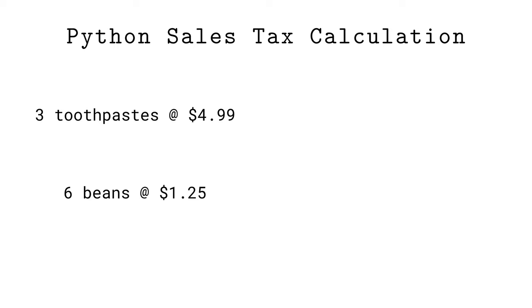In many places, governments charge sales tax on retail purchases. There are numerous exceptions, notably purchases of food. Suppose you're at the grocery store and buy three tubes of toothpaste for $4.99 each and six big cans of beans for $1.25 each.